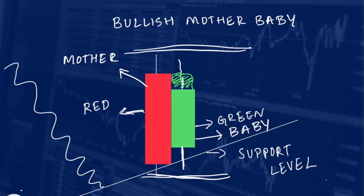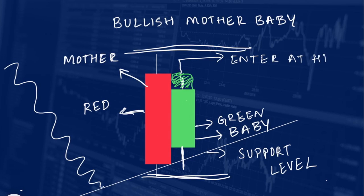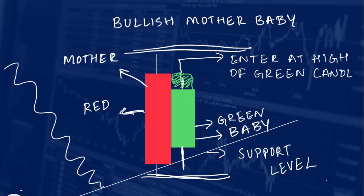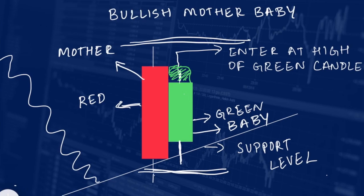We will buy at the high of the green candle when the next candle opens. You will check the high of the green candle and wait for the next candle to open. If it breaks the high of the previous green candle, we will enter the trade and take a long position. You will keep the stop loss at the low of the previous red candle.